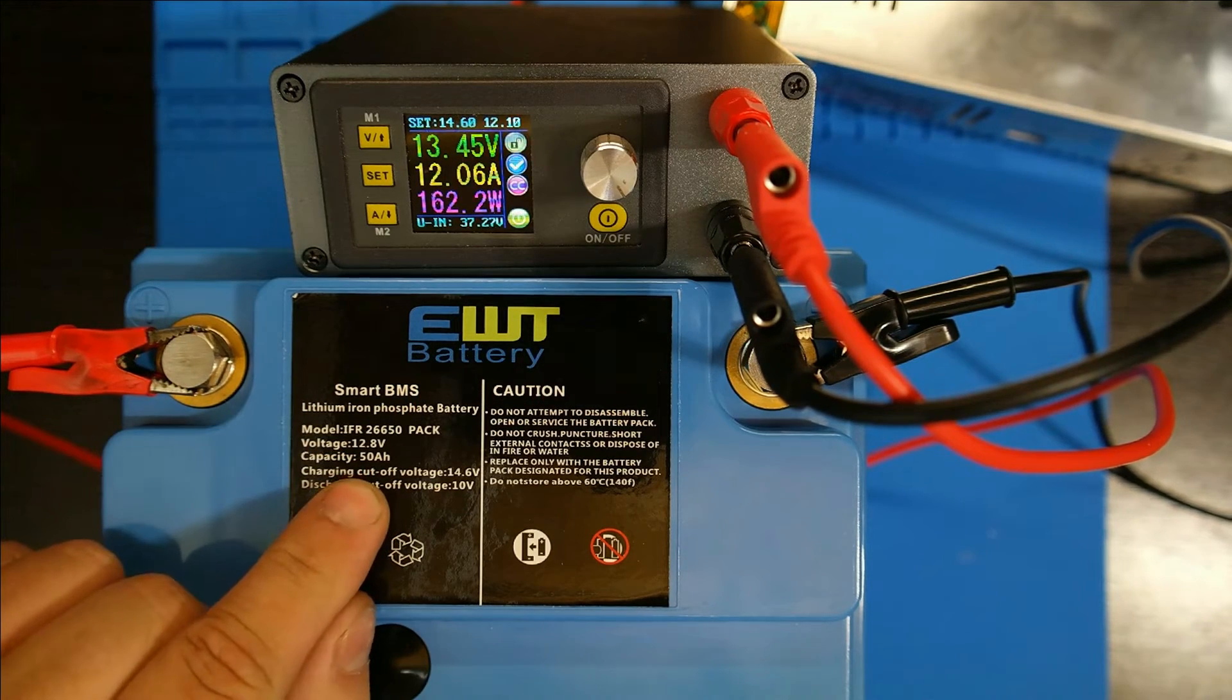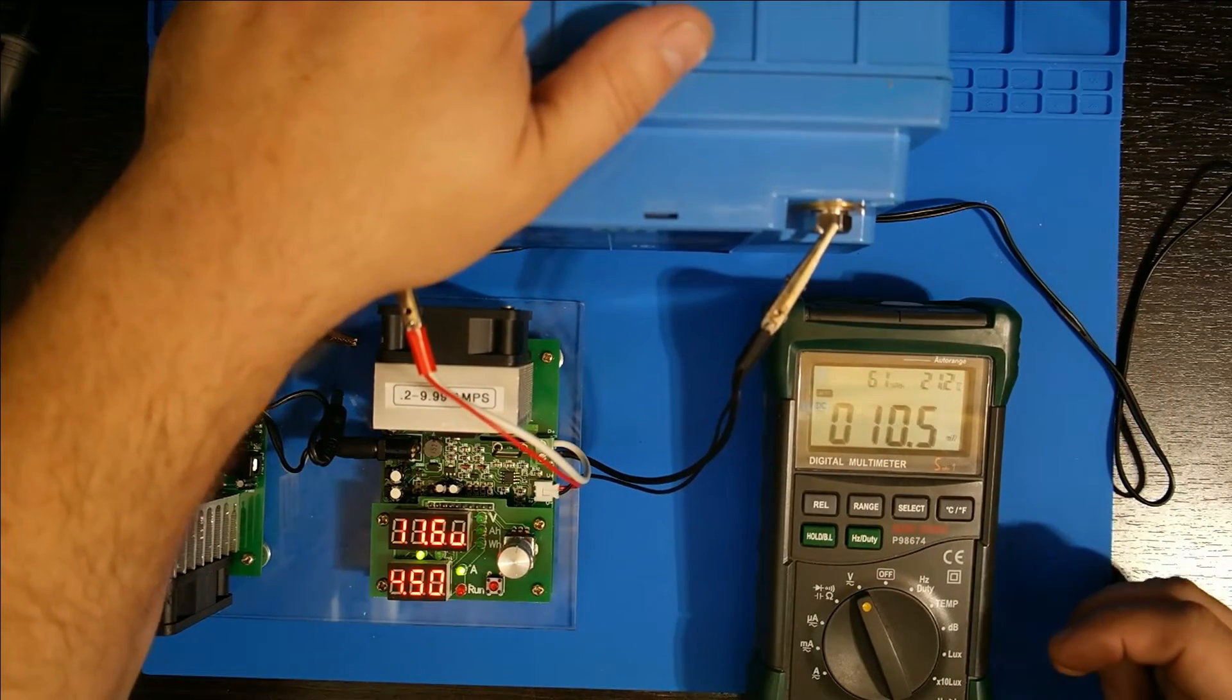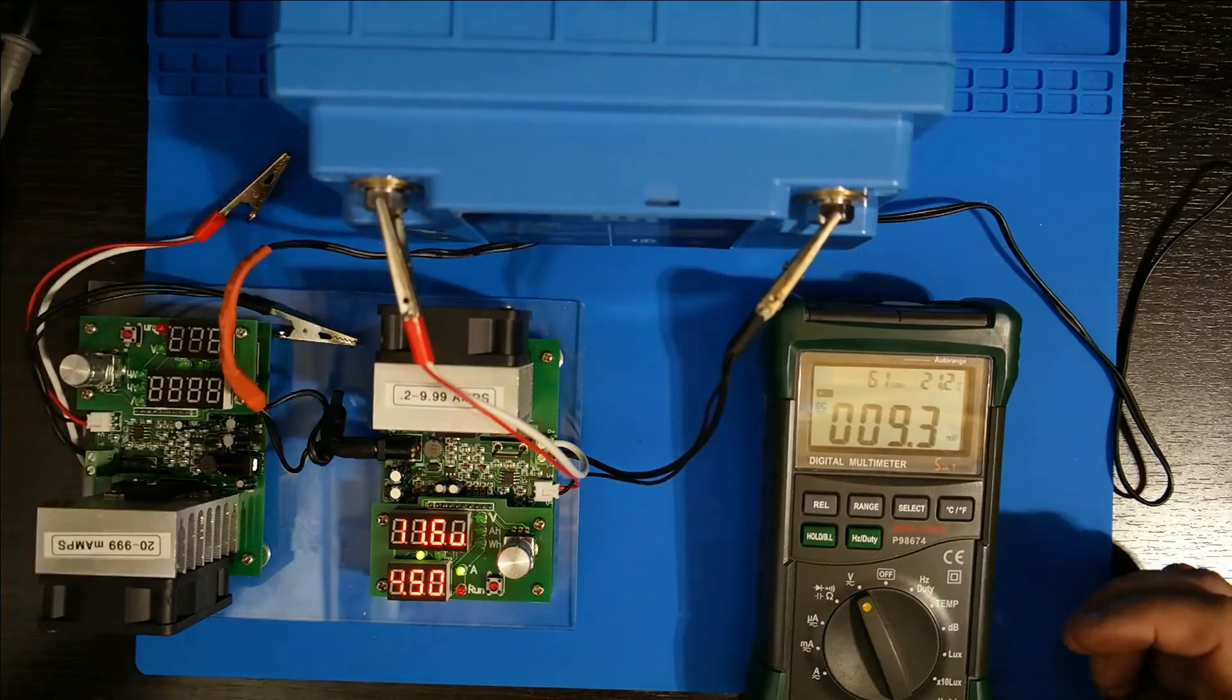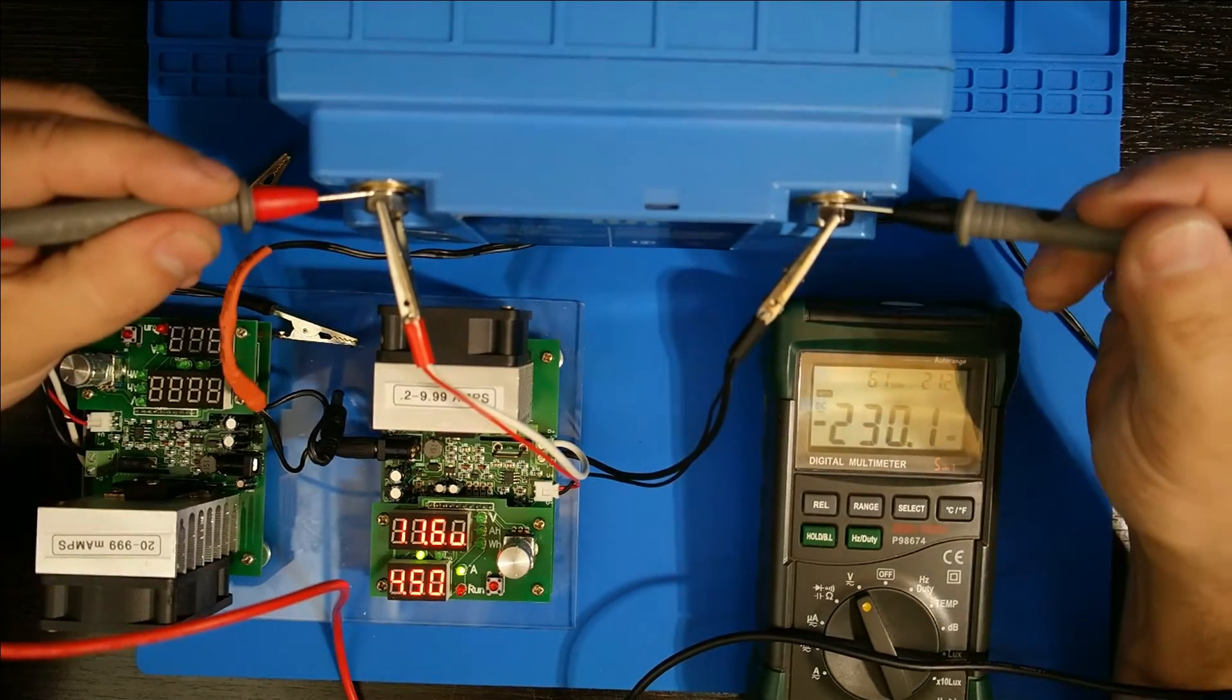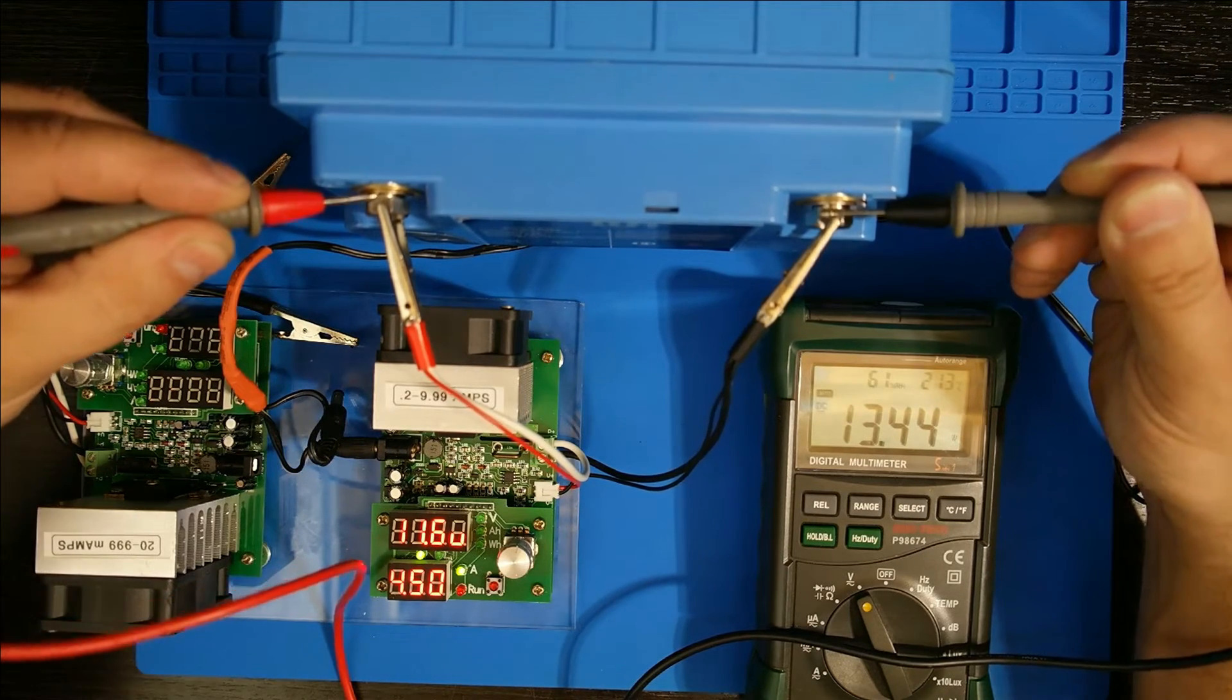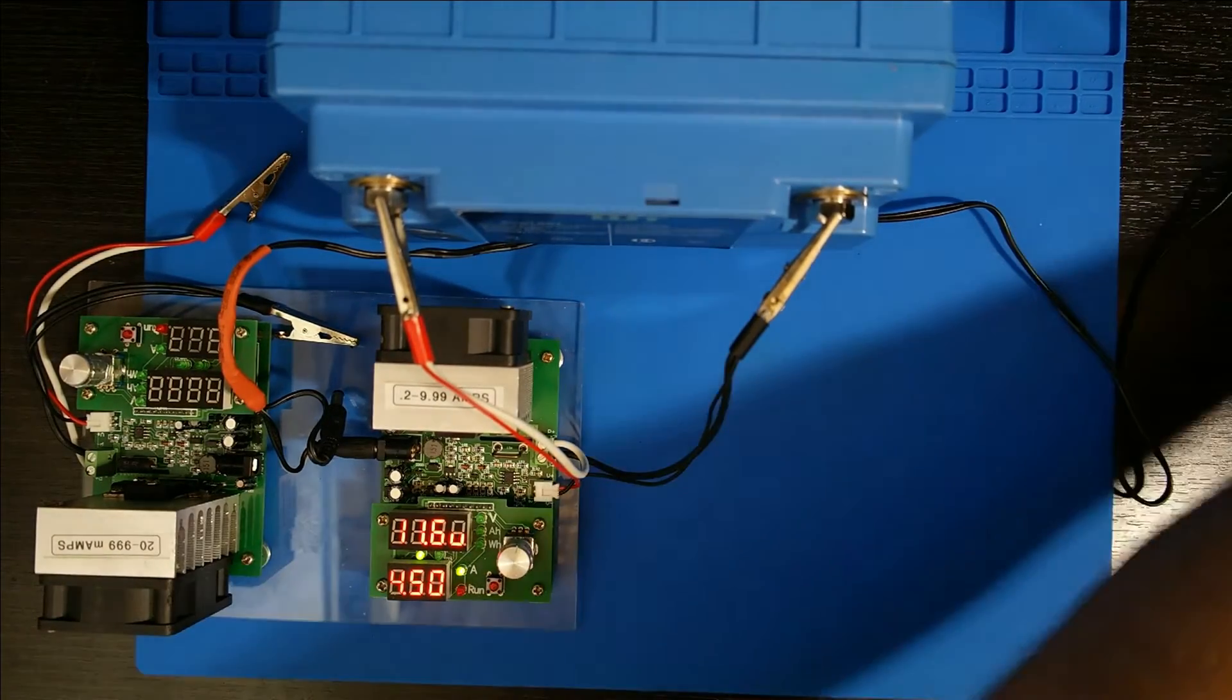Okay, so I got the battery fully charged up and it's now been sitting for about 15 hours or so. Let's see what the resting voltage is on this fully charged. And we are at 13.45 volts which is like 95% charged.